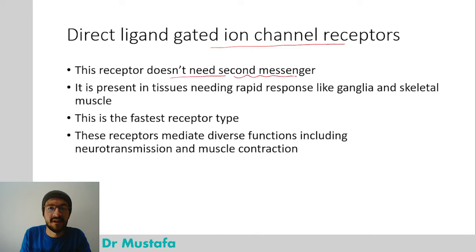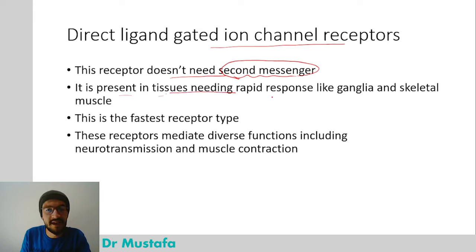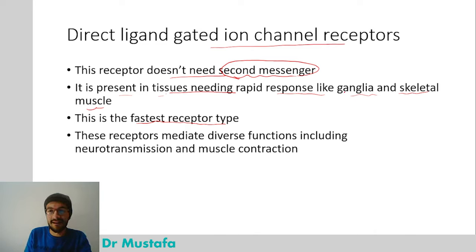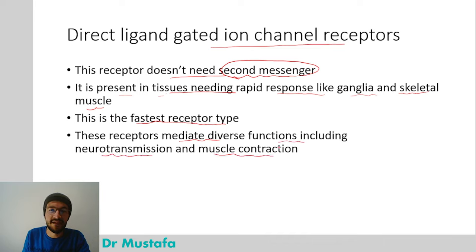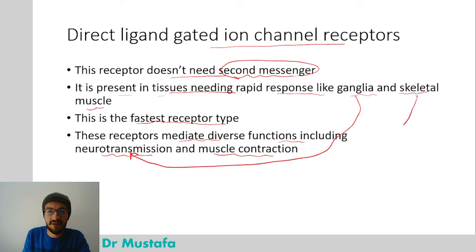Some key facts about the ligand-gated ion channel receptor: it does not need a second messenger, unlike the next receptor type we will discuss. It is present in tissues needing rapid response, like ganglia and skeletal muscle, and it is the fastest receptor type. These receptors mediate diverse functions including neurotransmission and muscle contraction.